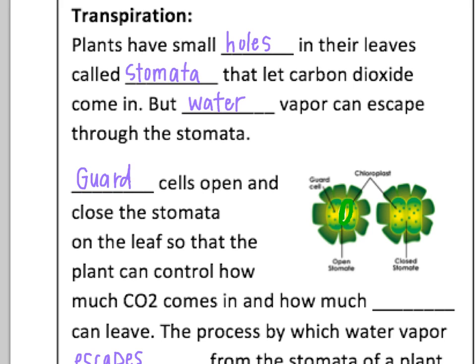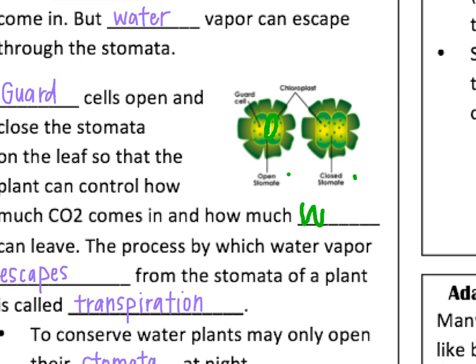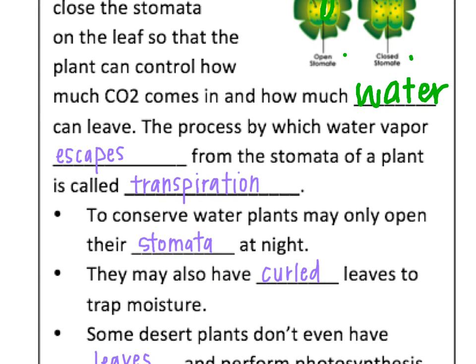Guard cells are on either side of the stomata so that it can open and close that hole and not let too much water out — it controls how much water can leave. The process by which that water vapor escapes is called transpiration. This is something that a lot of plants have to adapt for because they don't want to lose that water.